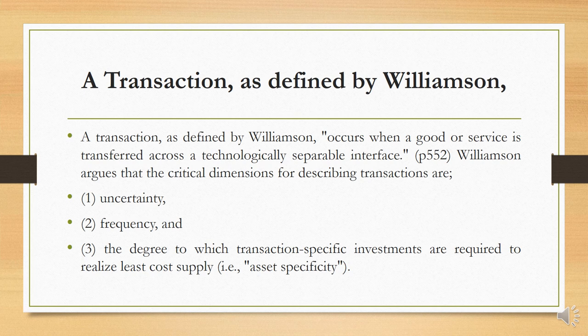As defined by Williamson, a transaction cost occurs when a good or service is transferred across a technologically separable interface. Williamson argues that the critical dimensions for describing transactions are: number one, uncertainty; number two, frequency; and number three, the degree to which transaction-specific investments are required to realize least-cost supply — that is, asset specificity.